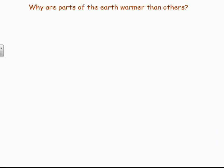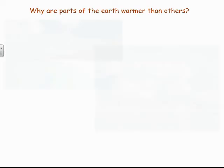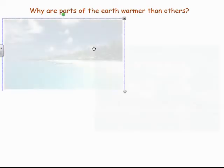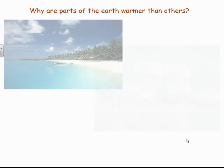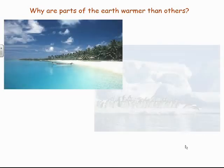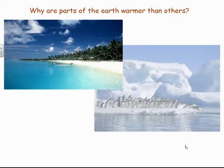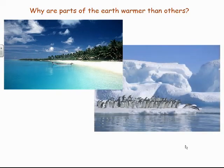Now, certainly we've known for a long time that if you go to different places you're going to have different temperatures. Some places have a nice warm climate, some places have a cold climate. You can go some places and have beautiful weather, and you can go to other places and the weather is kind of cold. Some places there's a gorgeous beach and the sun's always shining, where other places it's going to be a little bit more on the chilly side.